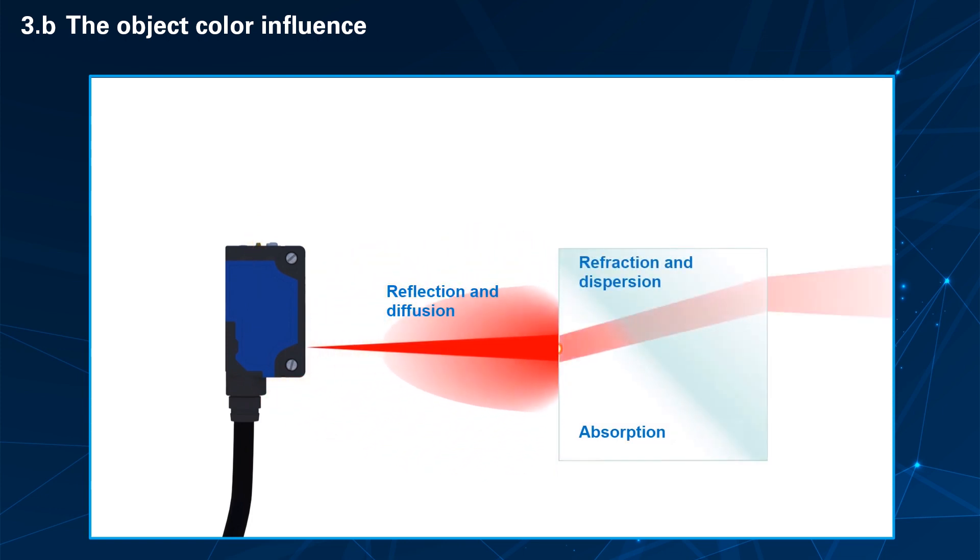Refraction and dispersion. If the object is transparent, a part of the remaining energy is transmitted with a different angle depending on the material.